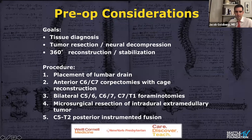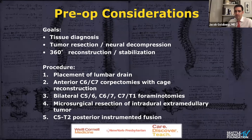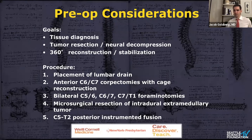Surgery is indicated in this case for symptomatic spinal cord compression due to the low cervical ventrally-positioned giant schwannoma. Surgery will achieve the goals of obtaining tissue for diagnosis as well as decompression of the spinal cord and stabilization. We used intraoperative monitoring and intraoperative CT for 3D navigation. We performed an anterior corpectomy, then tumor resection, cage reconstruction, and then in stage two, posterior foraminotomies and C5 to T1 fusion. At the end of the case, a lumbar drain was placed to help with healing and prevent CSF leak.